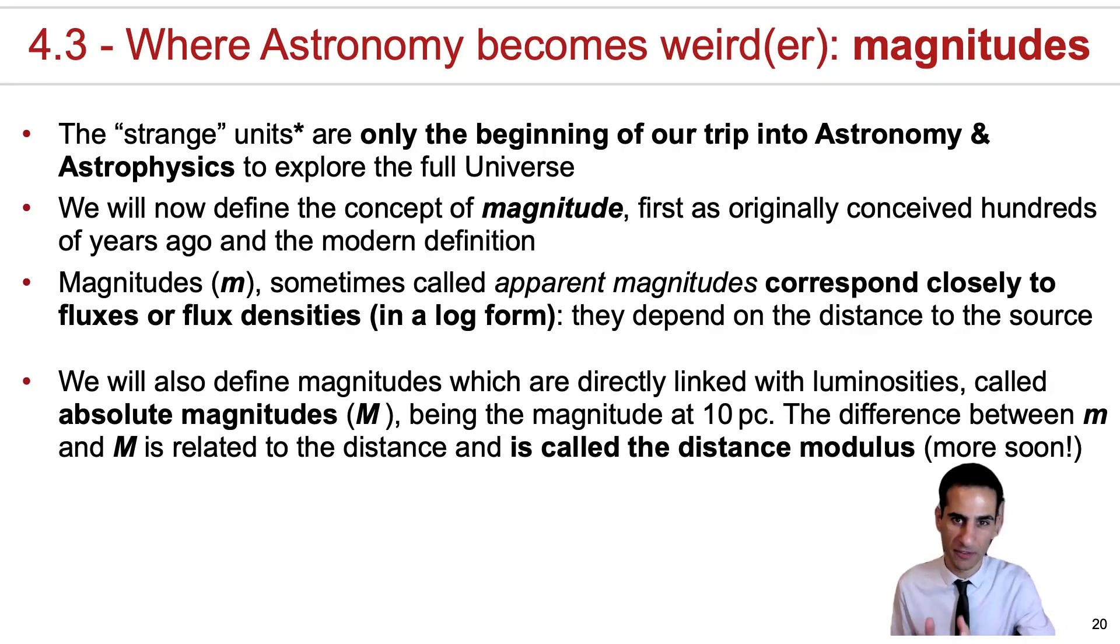What we're going to define is the concept of magnitude. The system is very weird, non-intuitive, but it was first introduced to essentially try to class stars into number one being very bright and number six being not so bright. This was conceived hundreds of years ago, but we now have a modern definition that is still very confusing and unintuitive, but that at least is very quantitative.